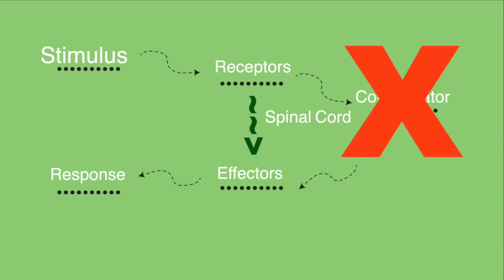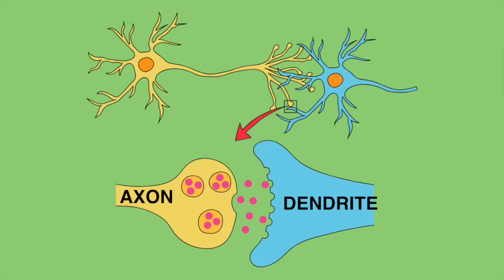Sometimes there is something known as a reflex arc for subconscious actions. For example, if you had your hand on a hot plate and it was burning, you would skip the coordinator and produce an automatic response from your spinal cord, which would cause you to take your hand away as soon as possible. The nervous system is basically a long system of nerve cells connected together. The axons and dendrites of each nerve cell are connected through a little gap called the synapse.